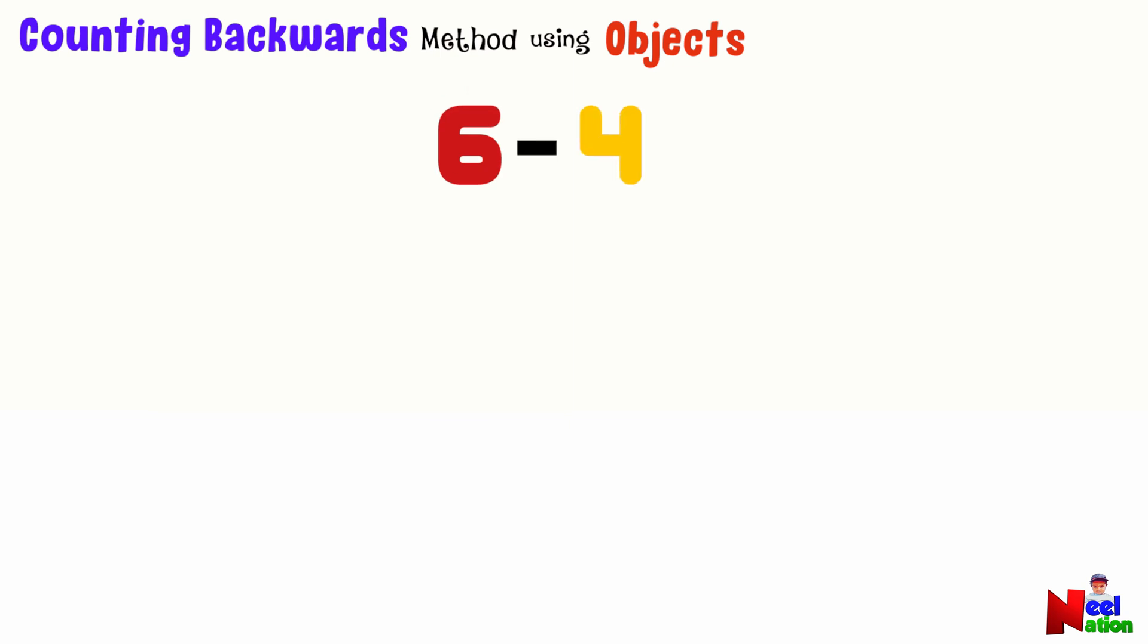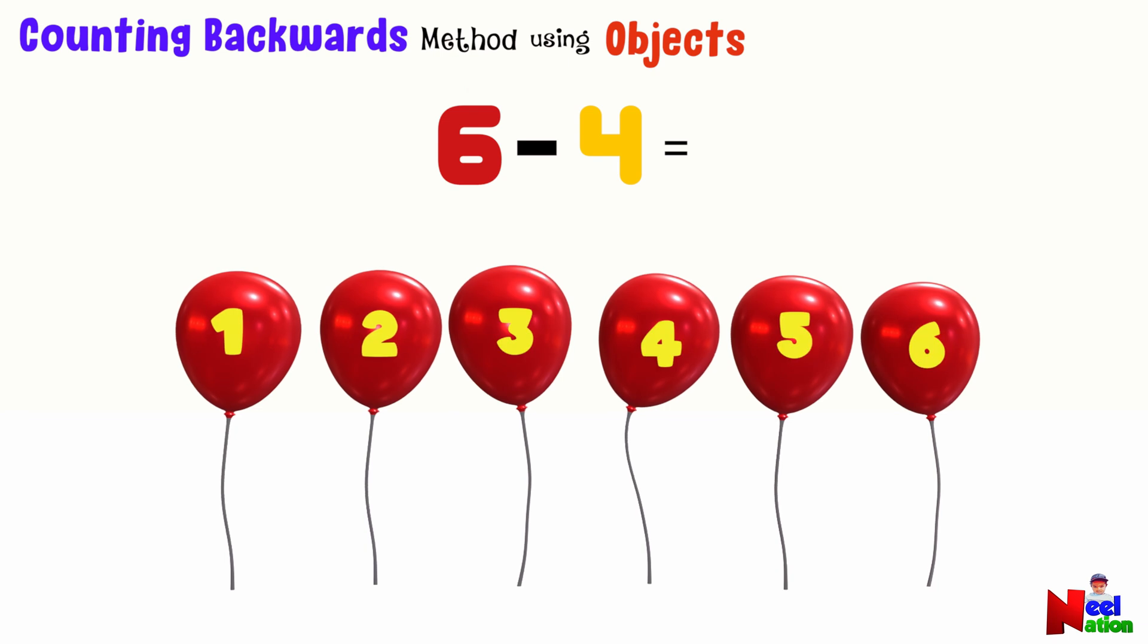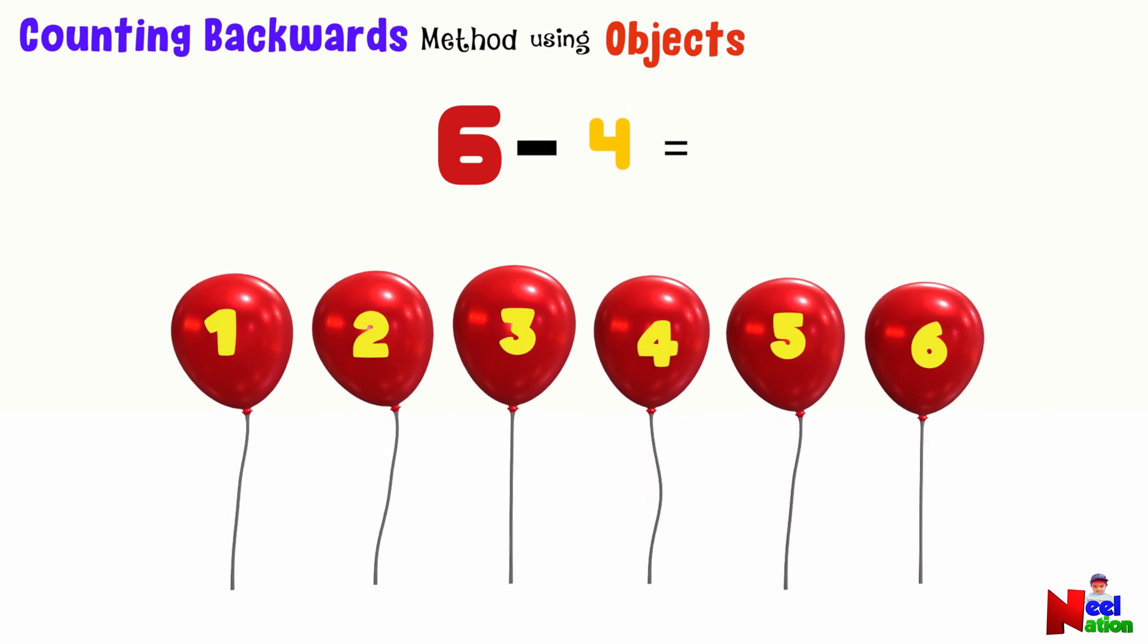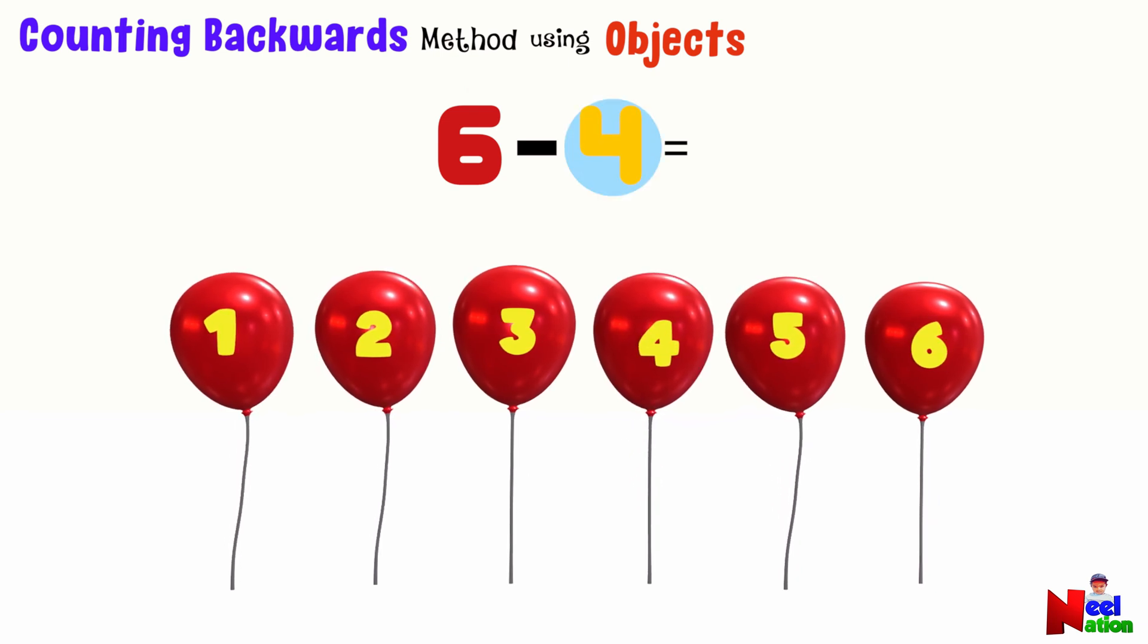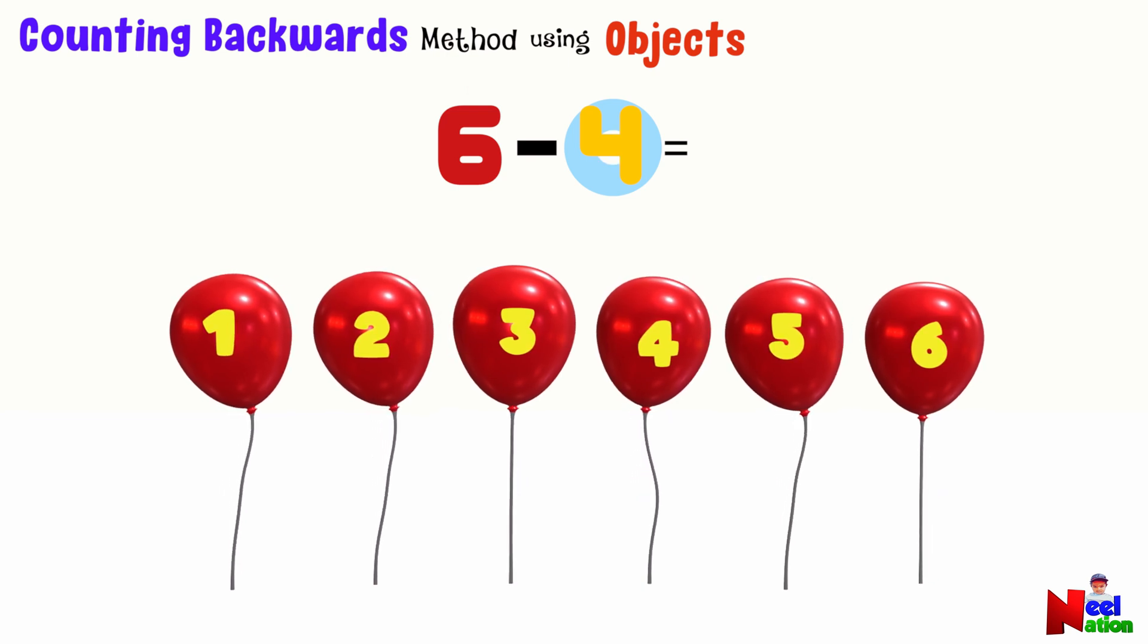Let's find out what is 6 minus 4. In 6 and 4, what is the bigger number? 6. We have 6 balloons here. Now, we are going to take 4 away by popping them one by one. We will count backwards as we pop each balloon. Ready? We start with 6.